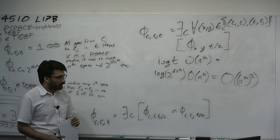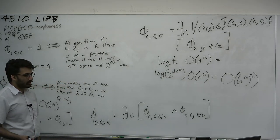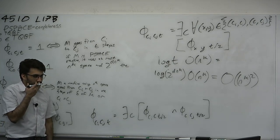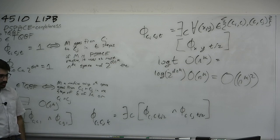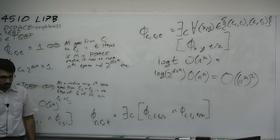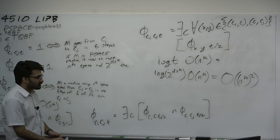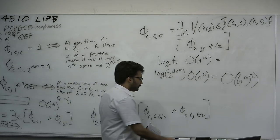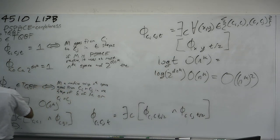It's fascinating how a formula, which is a static object, and a machine, which is a moving object, can be shown equivalent. A formula doesn't move, yet it can simulate the machine through the complicated variable structure — encoding a dynamic process in a static, expressive way.